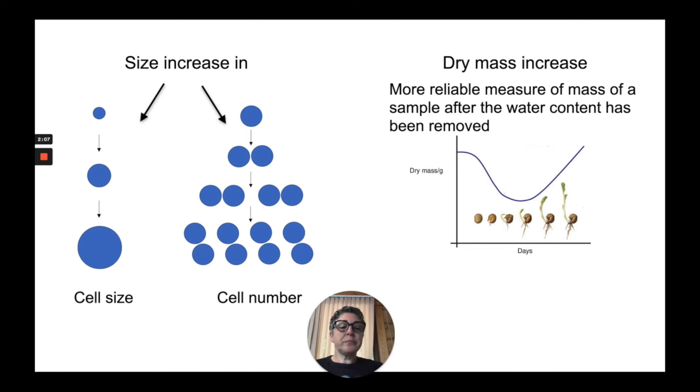Once the seed can start to photosynthesize by green leaves, then the bulk of the cell will begin to increase. And so the dry mass now will increase in that particular organism.